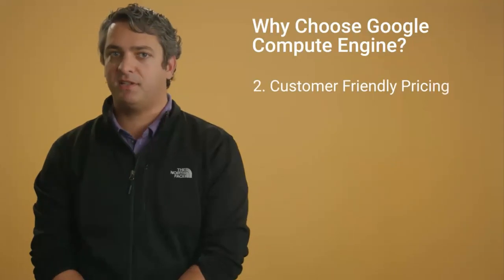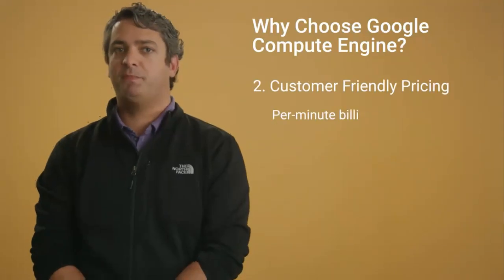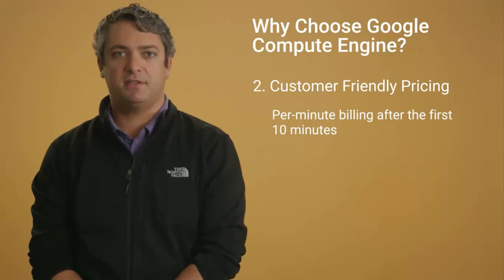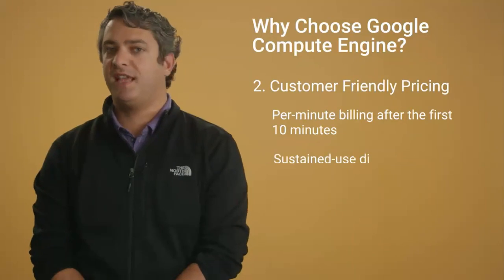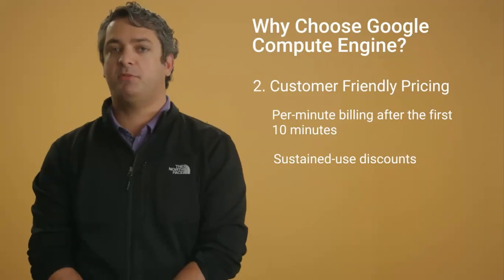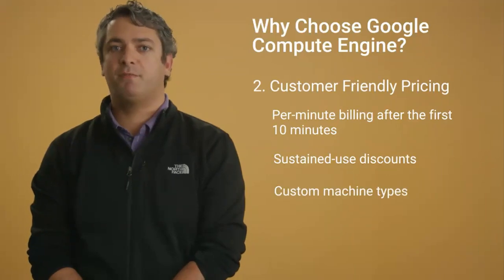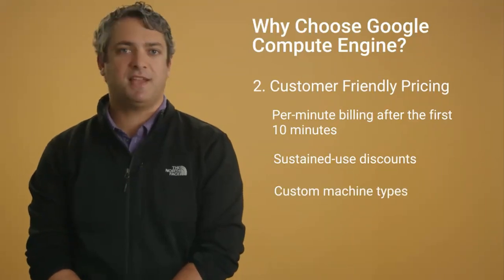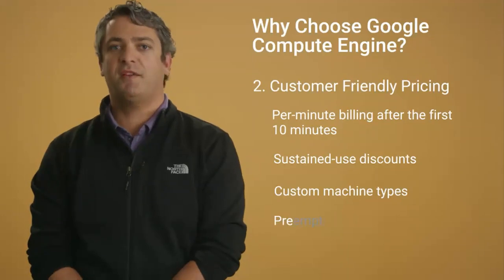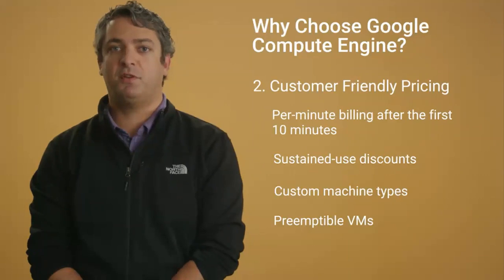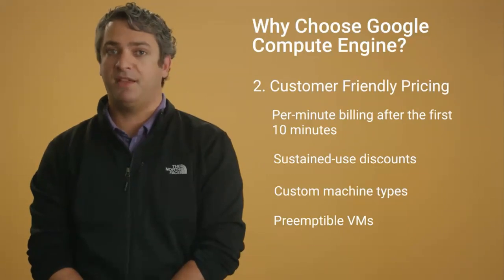The second is customer-friendly pricing. We give you per-minute billing after the first 10 minutes. We also have sustained use discounts, so the best price is applied automatically. We have custom machine types, so you don't pay for more machine than you need — you specify exactly the number of cores and memory required. And we also have preemptible VMs, so big discounts are applied for distributed data processing jobs where the loss of a few machines is not a major problem.